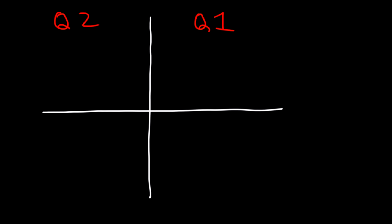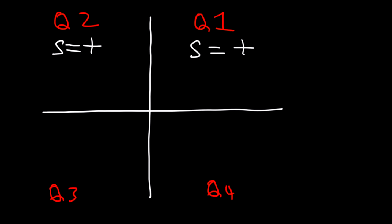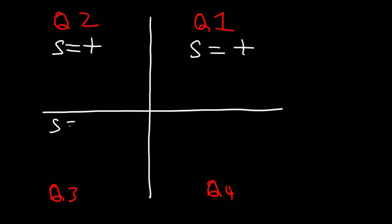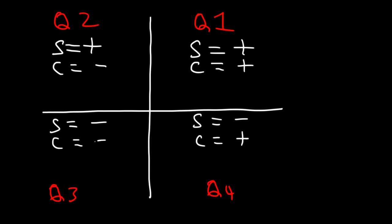Now let's review the signs of the trigonometric functions. Here we have quadrant 1, quadrant 2, quadrant 3, and quadrant 4. Sine is positive in quadrants 1 and 2 — sine is associated with the y value, and y is positive above the x-axis. Sine is negative in quadrants 3 and 4. Cosine is positive in quadrants 1 and 4 — x is positive on the right side and negative on the left, so cosine is negative in quadrants 2 and 3. Tangent, which is y over x, is positive in quadrants 1 and 3 and negative in 2 and 4.